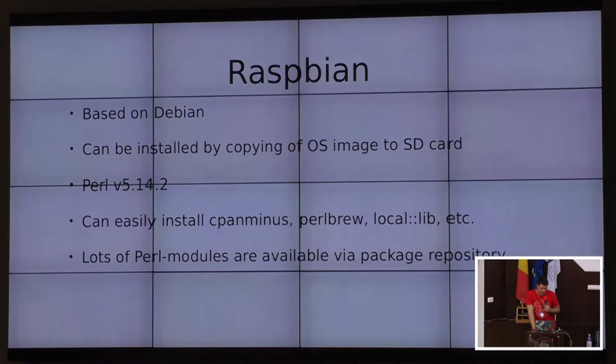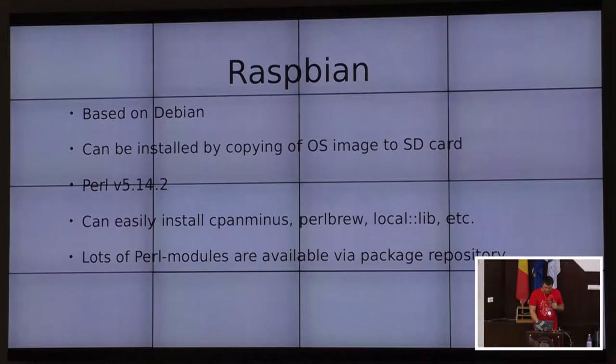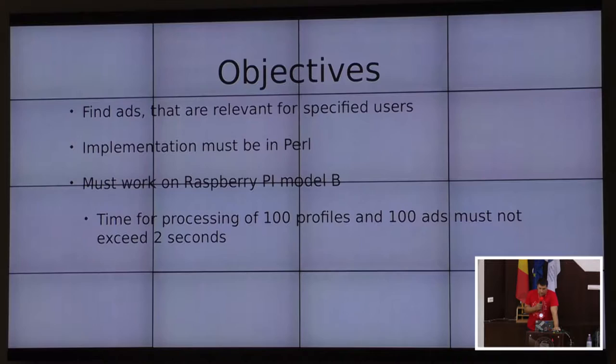I decided to use Raspbian because it is based on Debian. It is easy to install, and it has a reasonable Perl version, which is Perl 5.14. As you possibly know, Debian is quite friendly to Perl because you can install Perlbrew and all the required libraries, so you can possibly install a better version of Perl if you need it. And you can use a package repository to install Perl modules.